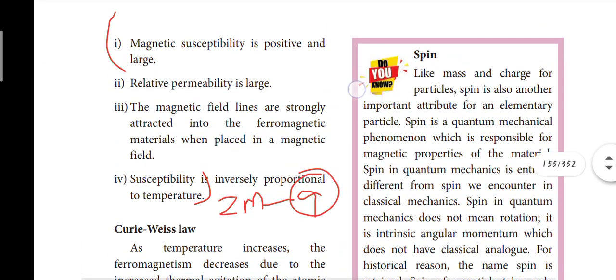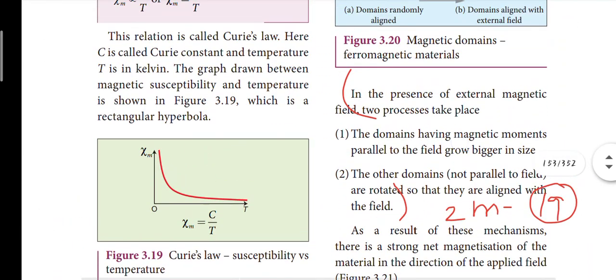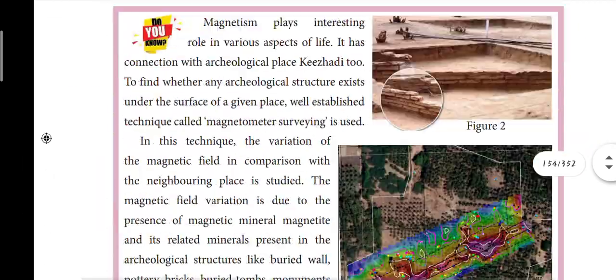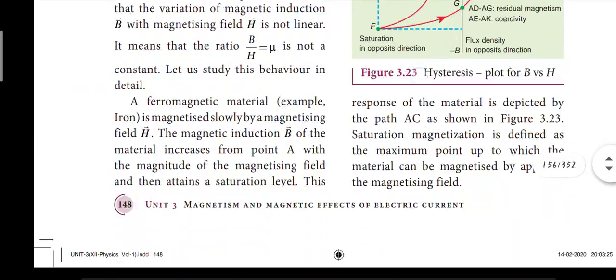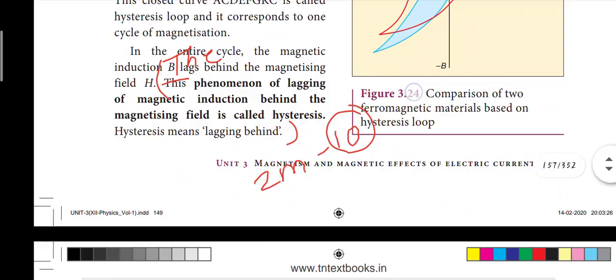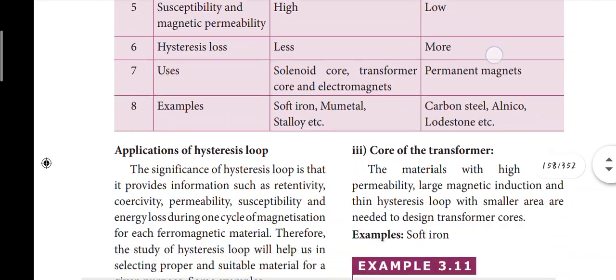Page 145: what happens in the presence of an external magnetic field for the domains in ferromagnetic materials — that is the nineteenth question. Next, page number 149: the phenomenon of lagging of magnetic induction behind the magnetizing field is called hysteresis — that is the tenth question.